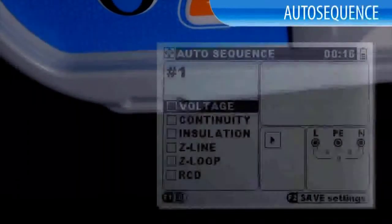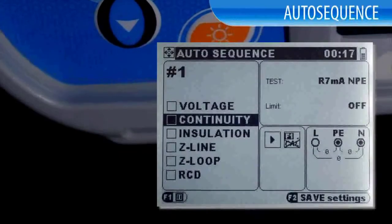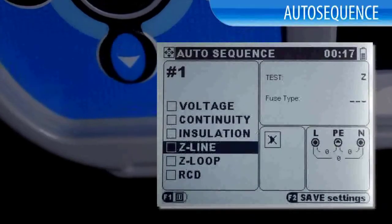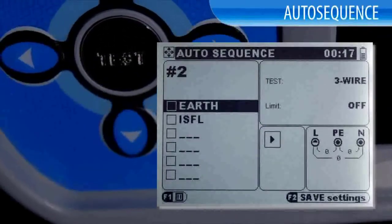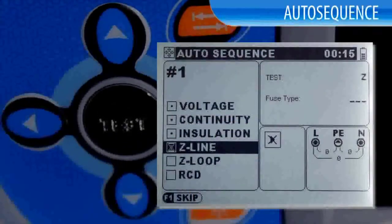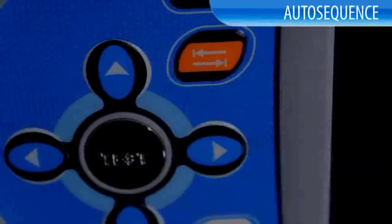Retrell's unique auto sequence feature will execute all requested tests while alerting the operator to any irregular installation conditions in one simple step. All you need to do is set the Eurotest XA into auto sequence mode and press the test button.